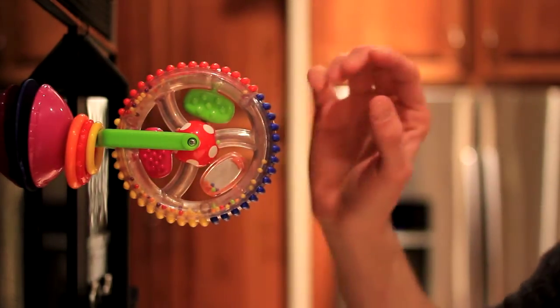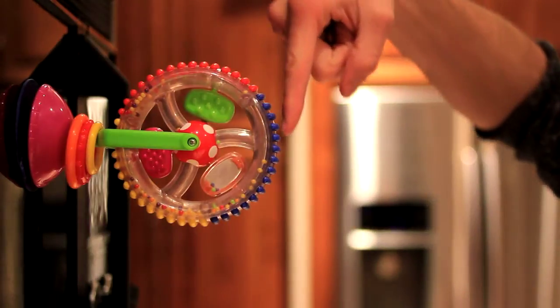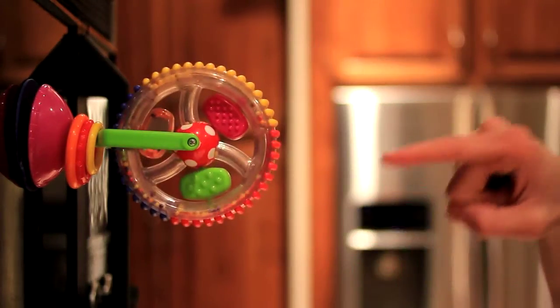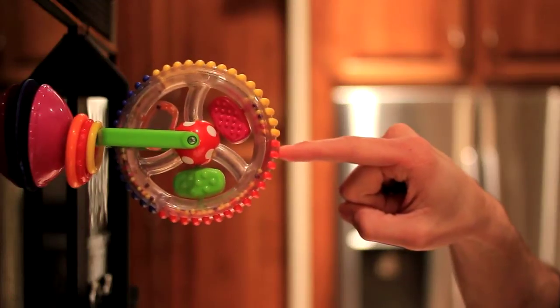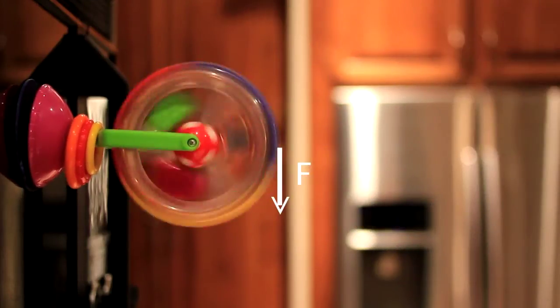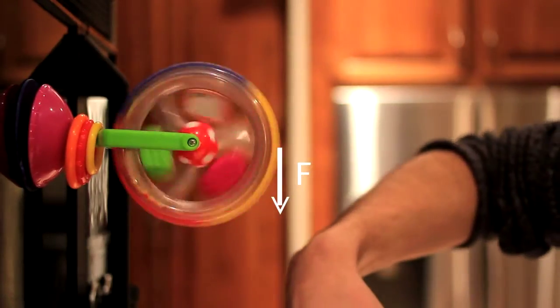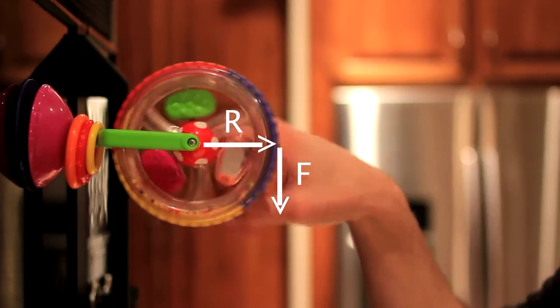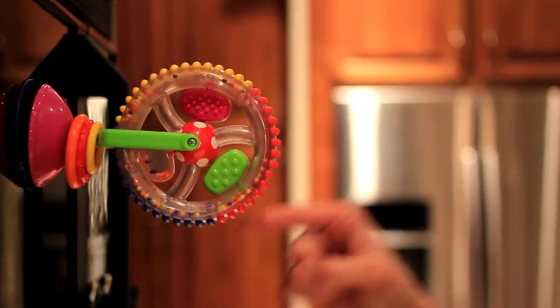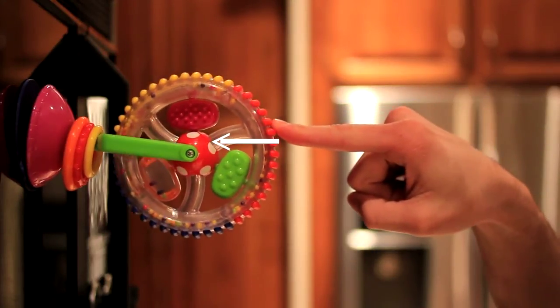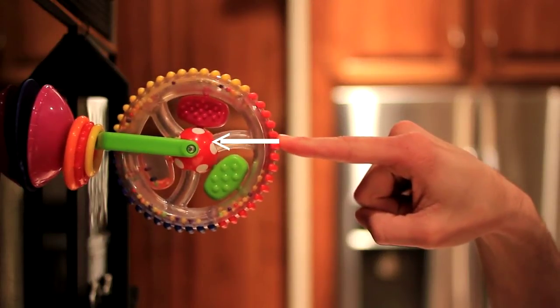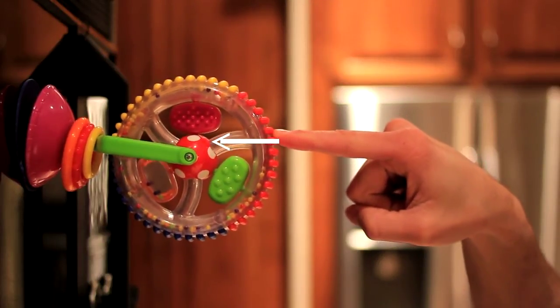Now, it also depends upon how much force I apply and the direction of that force. For instance, if I apply a lot of force radially down, perpendicular to my radius, well, I get a lot of spinning. But if I apply a lot of force right into that axis of rotation, well, I get no spinning.